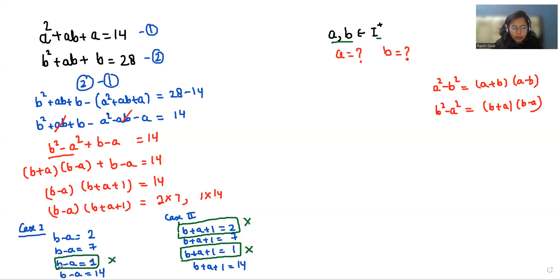Now b - a will be 14. For that, here if we do the squaring of a and we do the square of 7 here, it gives us 49, so that can't be possible. So we reject this case also.